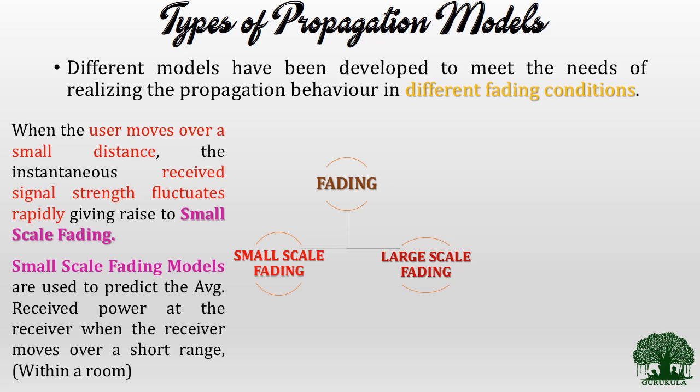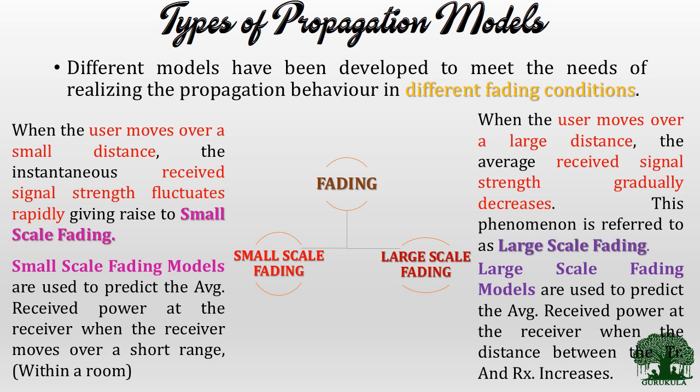On the other side, large-scale fading models deal with the amount of signal faded because of the distance between transmitter and receiver. When I increase the distance between transmitter and receiver, my signal is attenuated accordingly — this is large-scale fading, which happens over a very large distance compared to small-scale fading. Large-scale fading models predict the average received power at the receiver considering only the distance between transmitter and receiver.